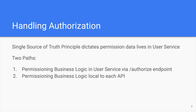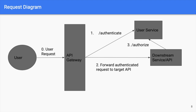Handling authorization is slightly trickier. The single source of truth principle dictates that our permission data also live in our user service. However, we are left with two paths in terms of applying our authorization business logic. On the one hand, we can centralize the business logic by putting it in the user service's authorized endpoint. Or, on the other hand, we can make our permissioning business logic local to each API, thereby delegating the responsibility down to our individual microservices. An example request utilizing an authorized endpoint might look as follows: the user makes a request against the API gateway, the gateway queries authenticate, and then forwards the authenticated request to the target API, which then queries the user service's authorized endpoint and allows or denies the request accordingly.